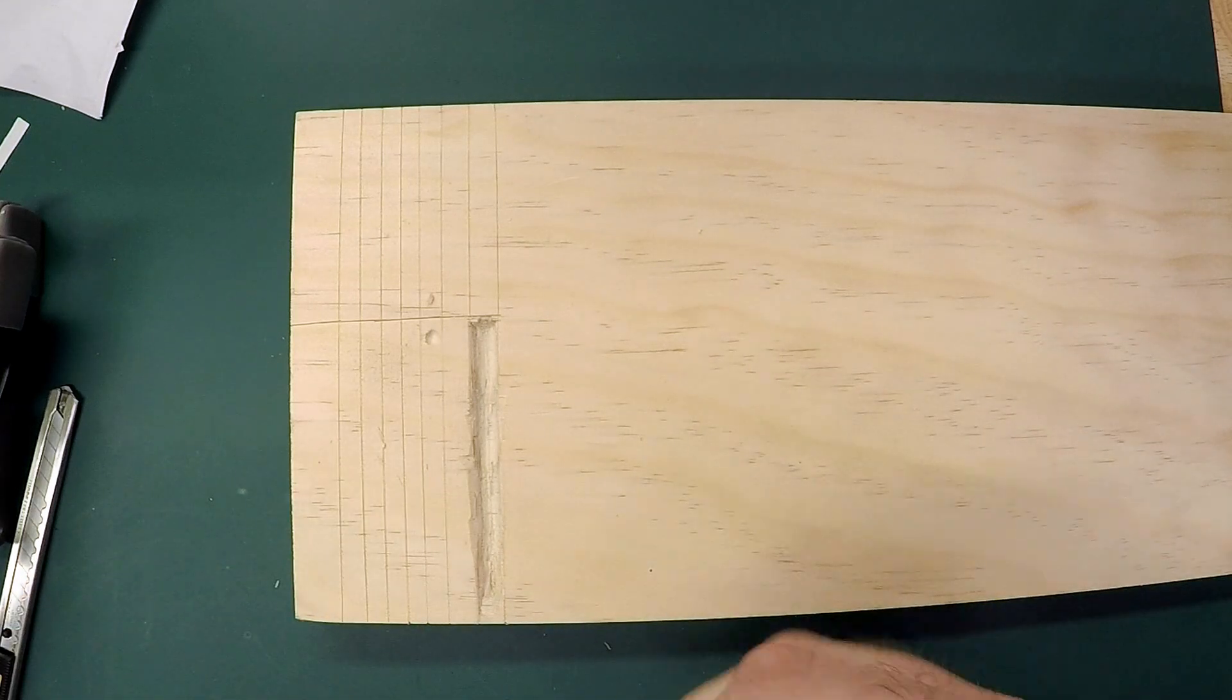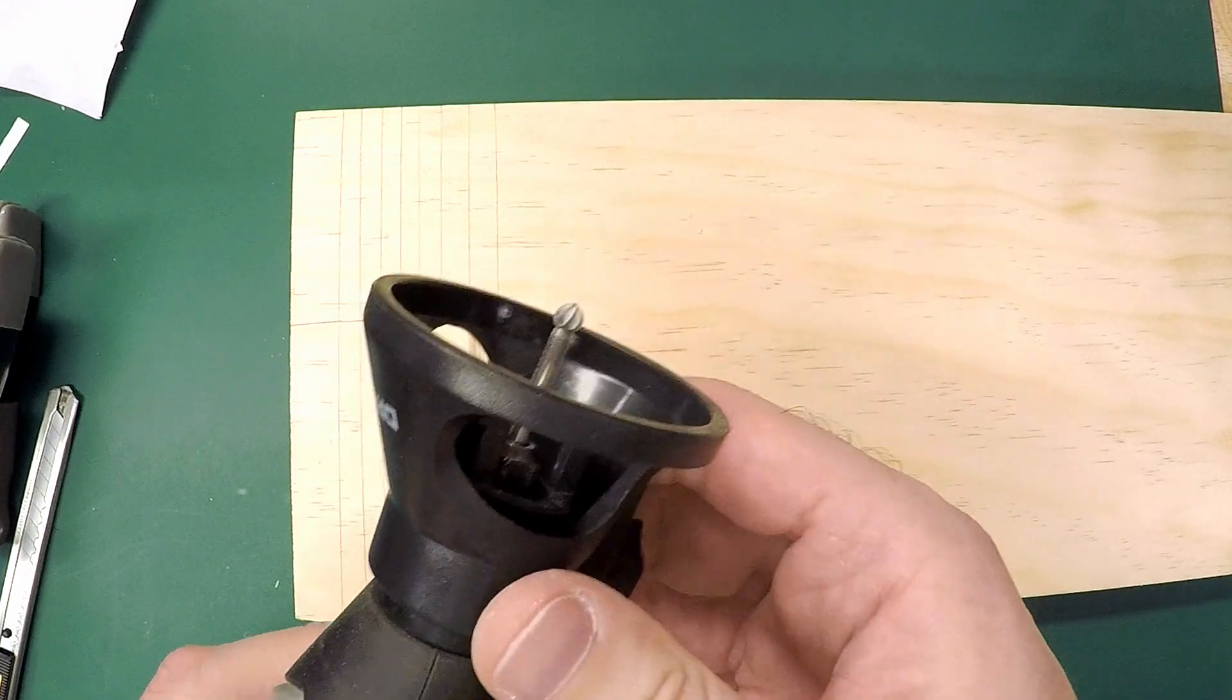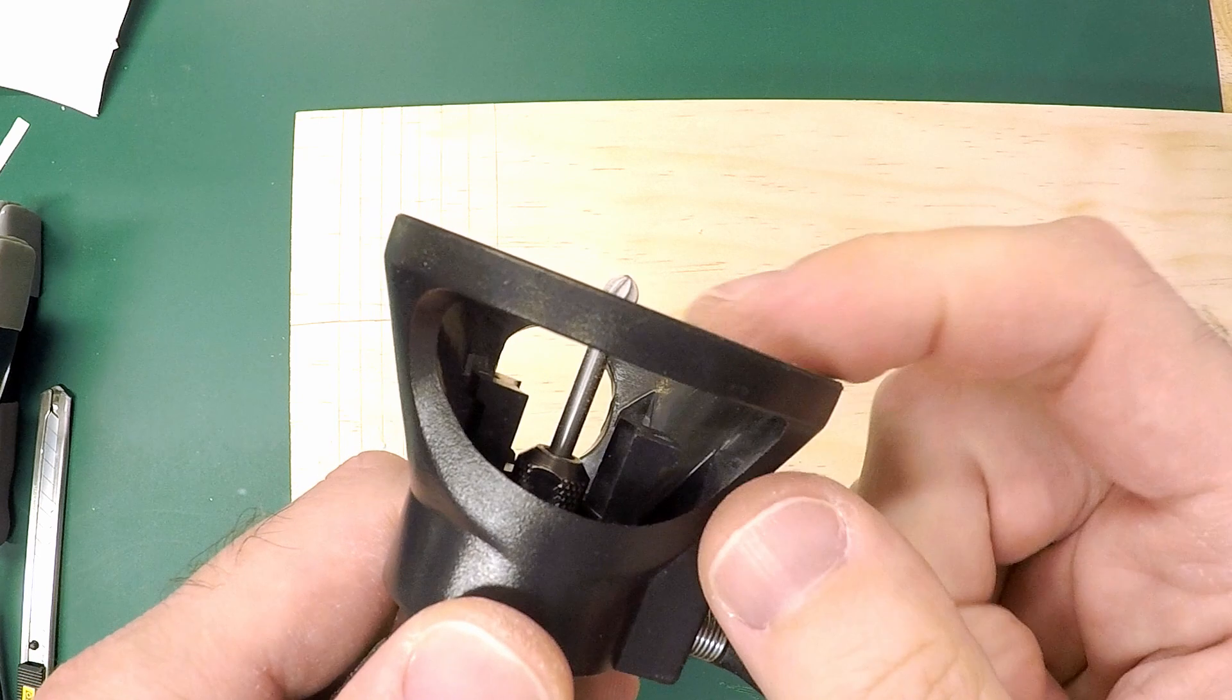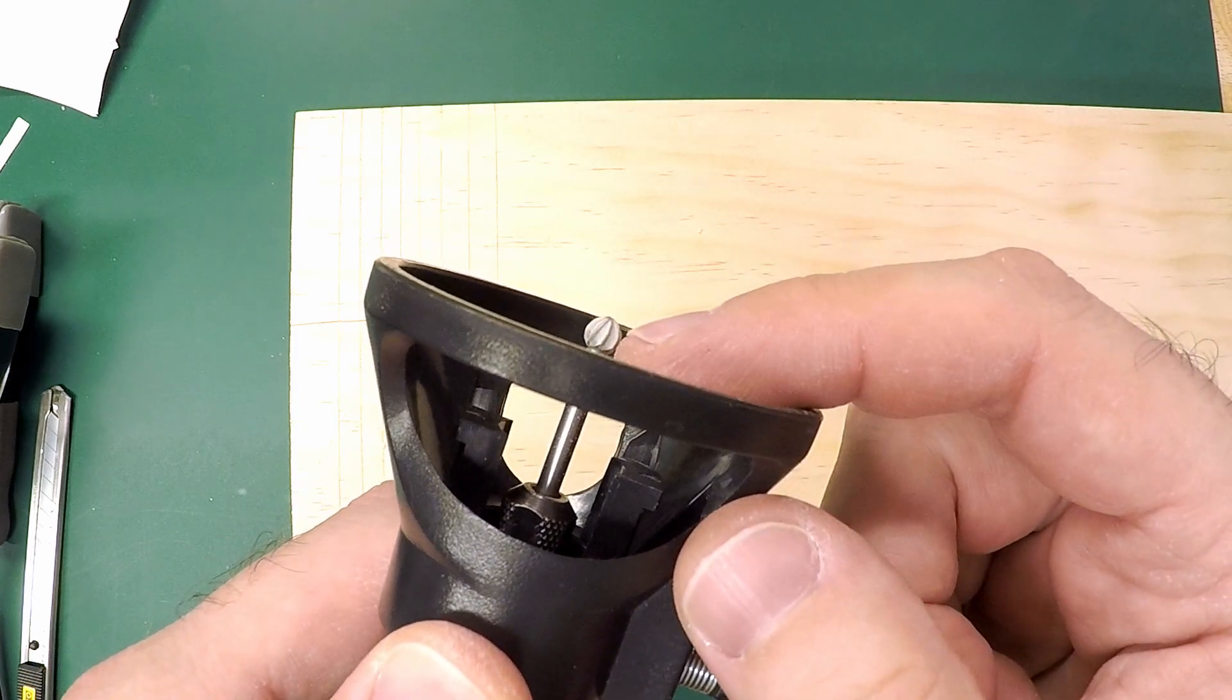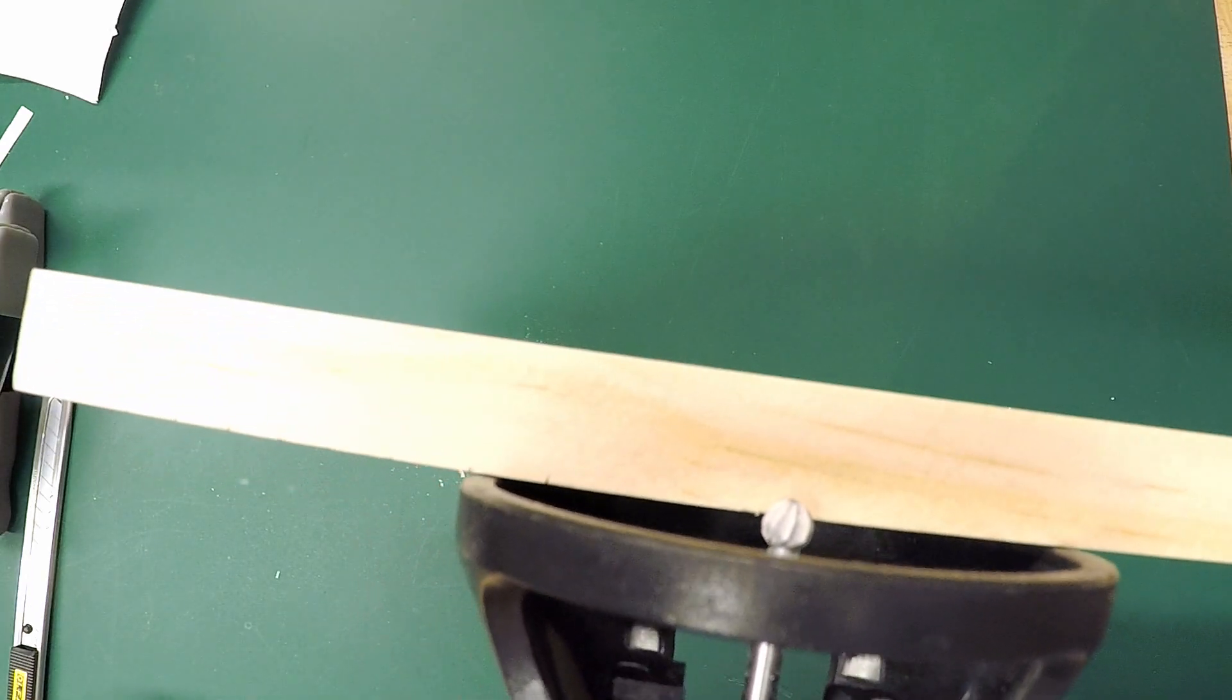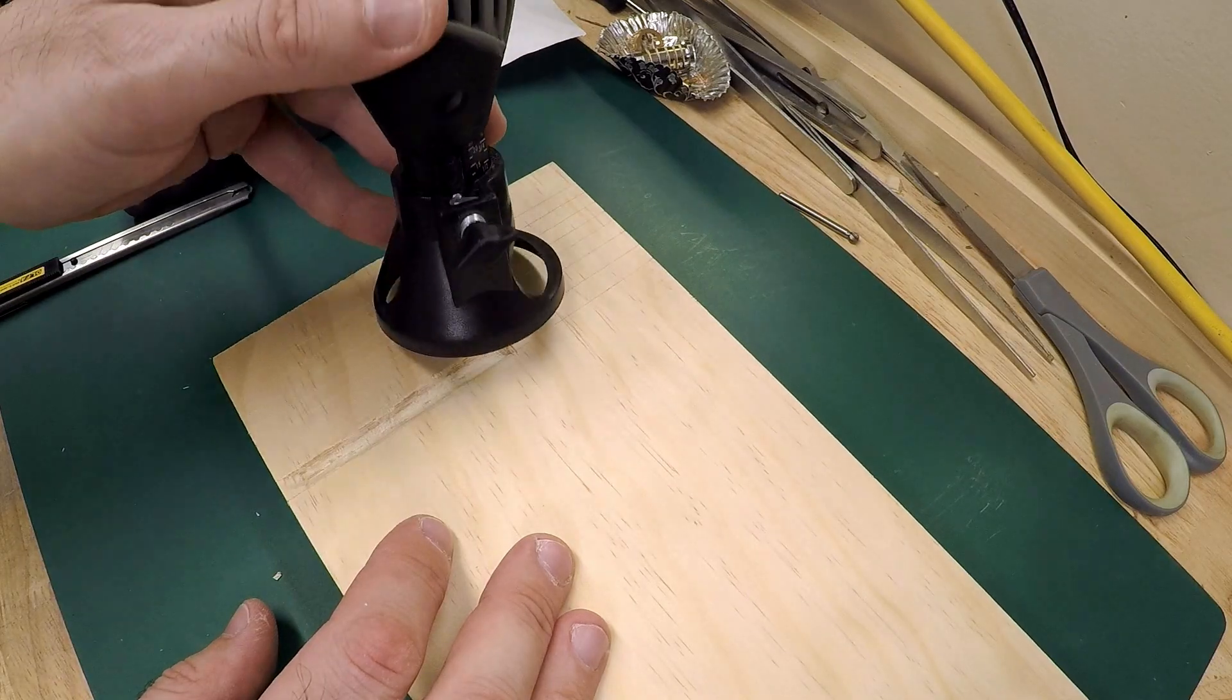Now I'm going to take my depth attachment, I'm going to screw that on, and we'll have to get that set to the proper depth. So you can see here that I can adjust that up and down. And what you want to do is just have it a little extended from the bottom. So you can see here that when I go on my edge of the wood, it's just extended in a little bit.